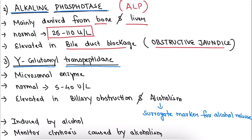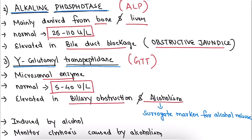The third serum enzyme is gamma glutamyl transpeptidase (GGT). It is a microsomal enzyme with a normal range of 5 to 40 units per liter. It is elevated in biliary obstruction and alcoholism. GGT is a surrogate marker for alcohol misuse — it is induced by alcohol and is used for monitoring cirrhosis caused by alcoholism.